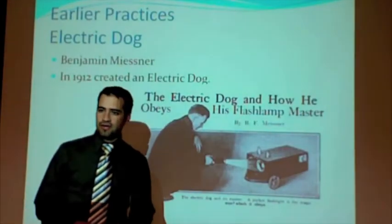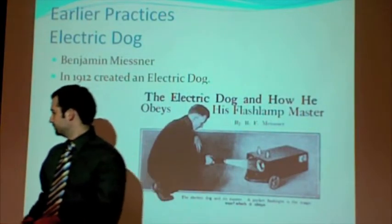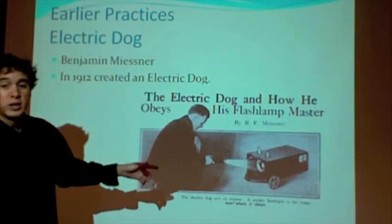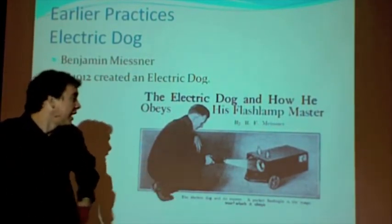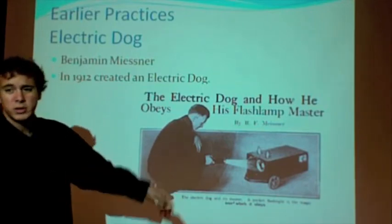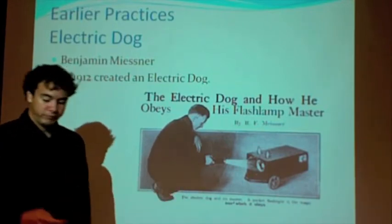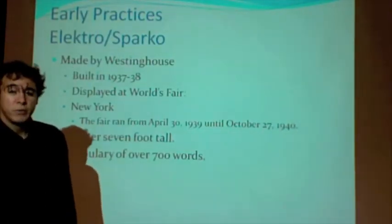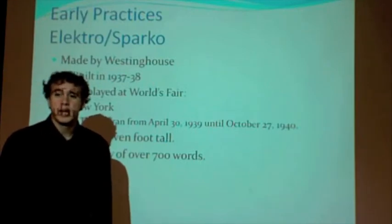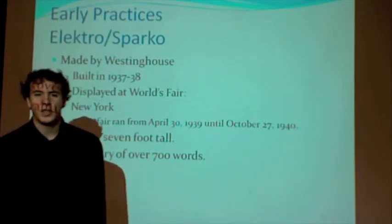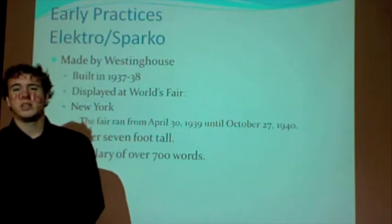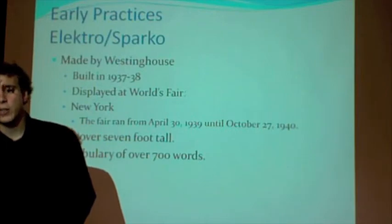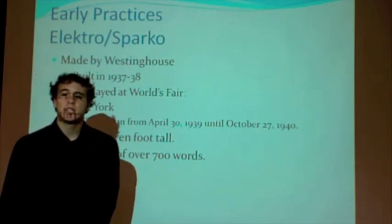Now Bruno is going to talk about early robotics practices. Here we can see a picture of an early practice — this is the Electric Dog, a pretty simple and old-school robot. We also have Electro and Sparko, two robots made by Westinghouse in 1937 and 1938, which were displayed at the World's Fair in New York. The fair ran from April 30, 1939 until October 27, 1940.